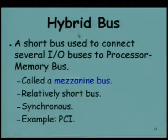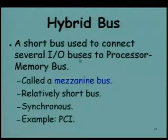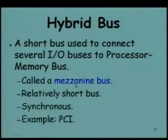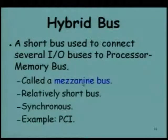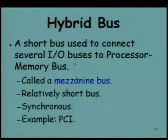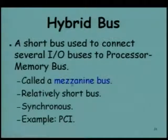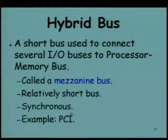In addition to those two buses, we also have a hybrid bus. A hybrid bus connects the different I/O buses to the processor-memory bus. It is also called a mezzanine bus — like a mezzanine floor between the ground floor and the top floor of a house. Similarly, between the processor-memory bus and the I/O bus, you have this intermediate bus. It is a relatively short synchronous bus; examples include PCI Express and PCI.